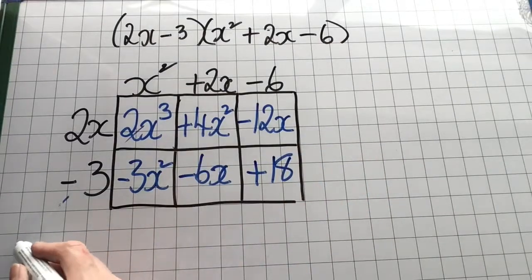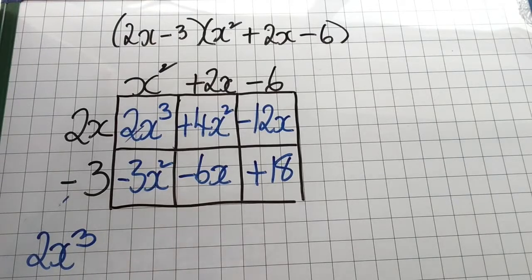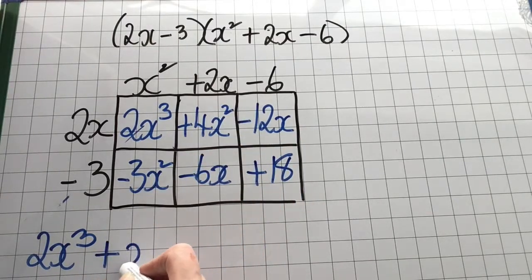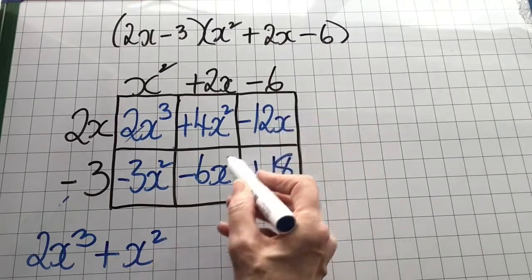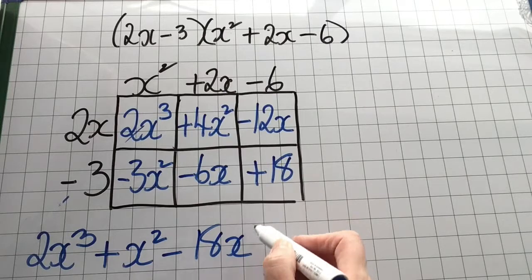Now simplify the same way, along the diagonals, like with like. 2x cubed plus x squared minus 18x and plus 18.